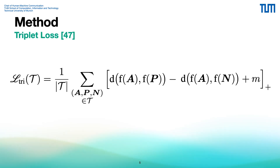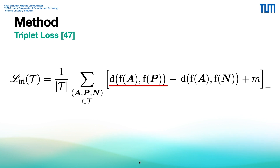Let me briefly explain the triplet loss introduced by Schroff et al. The basic concept is that you have triplets with one anchor image, one positive image showing the same identity as the anchor, and one negative image containing a different identity. The triplet loss is calculated as the sum of the distance between anchor and positive image features minus the distance between anchor and negative image features, plus a margin for each triplet in the set T, considering only positive values. This sum is divided by the cardinality of set T, minimizing the anchor-to-positive distance while maximizing the anchor-to-negative distance. The margin ensures a minimum distance between positive and negative images.